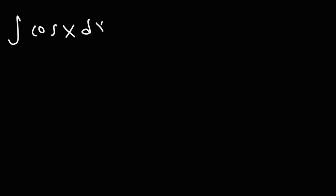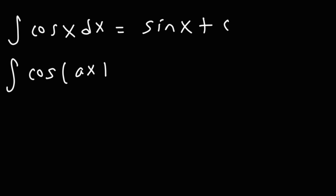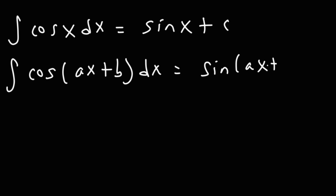The antiderivative of cosine of ax plus b is positive sine of ax plus b divided by a, plus c. This transformation works for the other trig functions like secant, tangent, cosecant, and cotangent as well — if you remember the base formulas you can remember their variations.